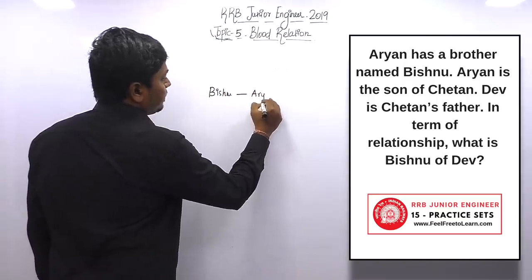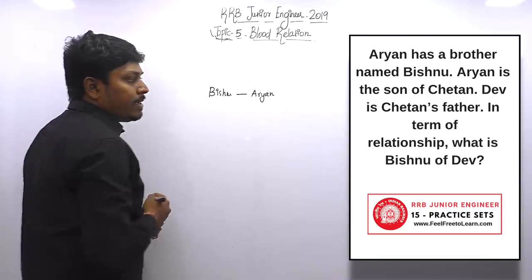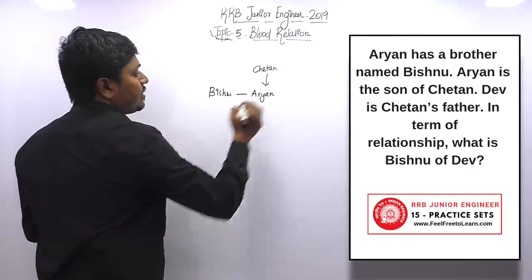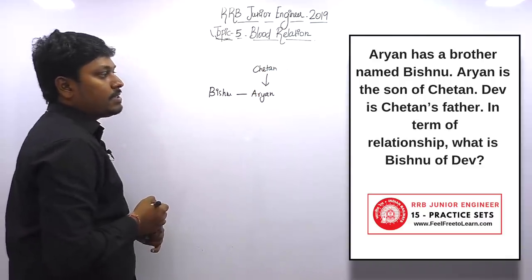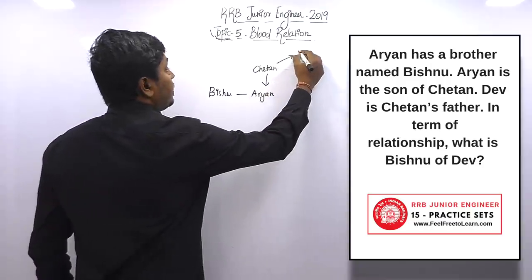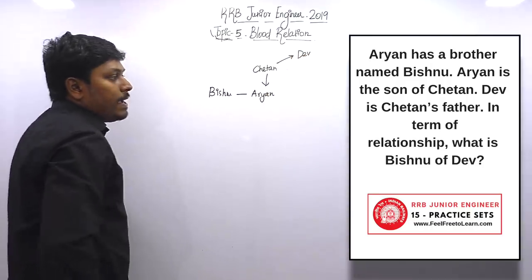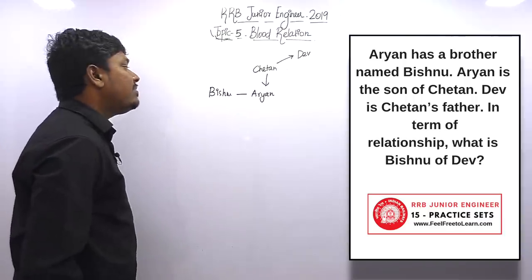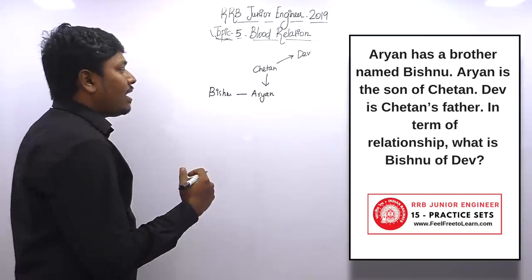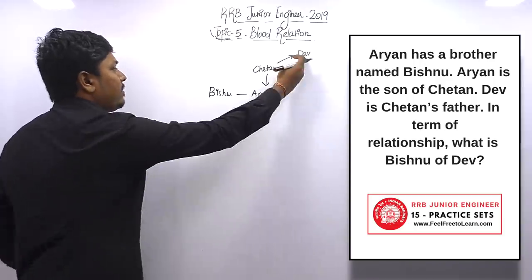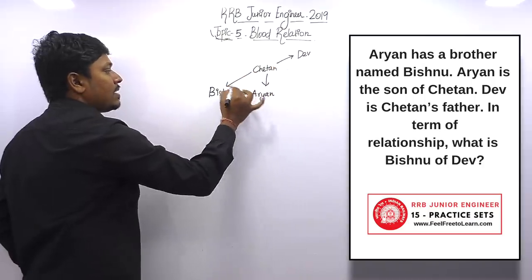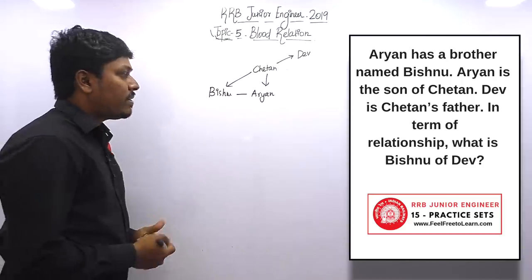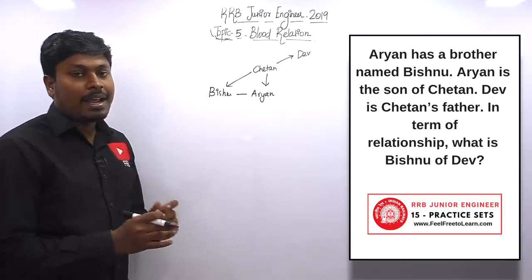Question number nineteen: Aryan has a brother named Bishnu. Aryan is the son of Chitan. Dev is Chitan's father. The question is: what is the relation of Vishnu to Dev? From Dev, Chitan is the son, and Chitan's son is Vishnu — so Vishnu is Dev's grandson. The answer is grandson.